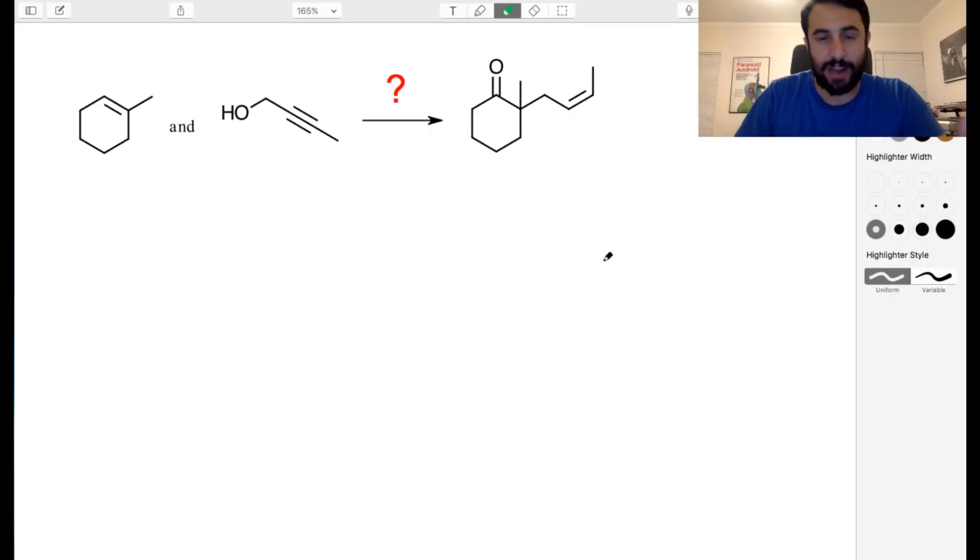A very helpful way to start is to try to identify which carbons on the target molecule belong to which reagent. It seems very clear that all of this material is from this cyclic compound. We've got a ring here, we've got a ring there.